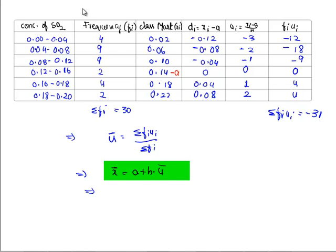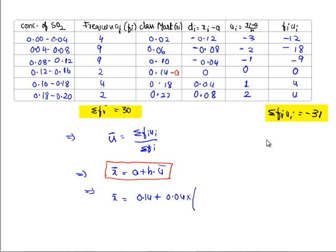Substituting all the values we got in the formula, x̅ is equal to a plus h into u̅. We get x̅ is equal to a is 0.14 plus h is 0.04 into Σfi*ui by Σfi, that is u̅, which is nothing but -31/30. By solving it, we get x̅ is equal to 0.14 - 0.041, which is nothing but 0.099 ppm.